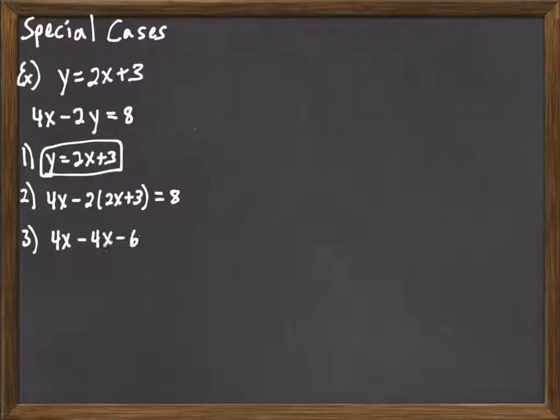So simplifying, we can distribute the 2 through. We get 4x minus 4x minus 6, don't forget to distribute the negative, equals 8. The 4x's cancel out and we get this statement negative 6 equals 8. Well we know negative 6 is never equal to 8.